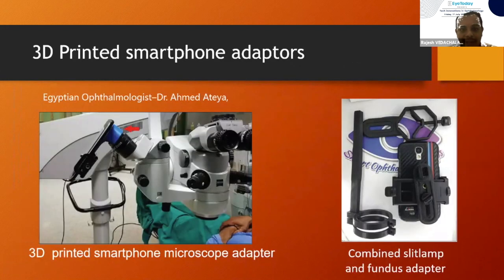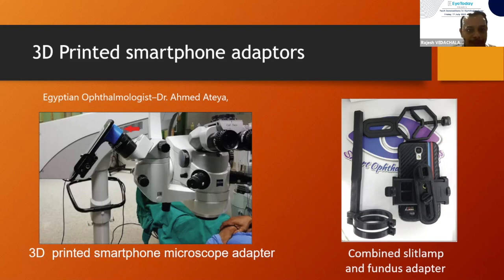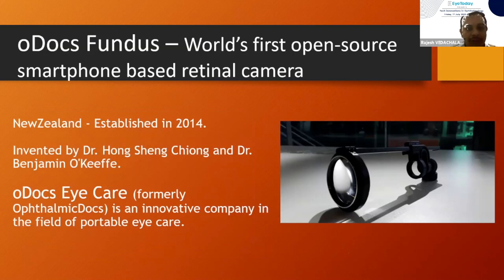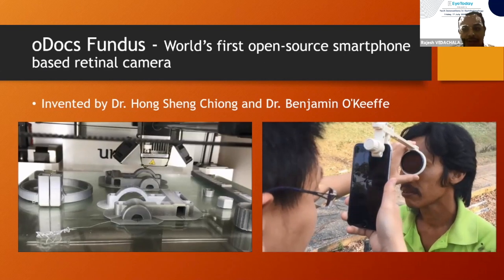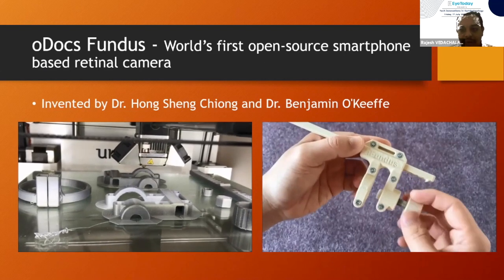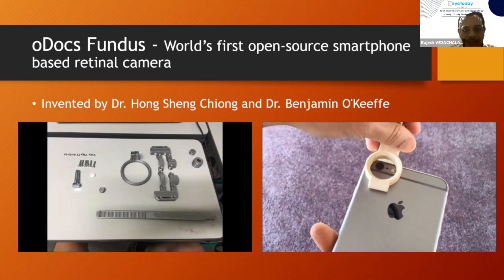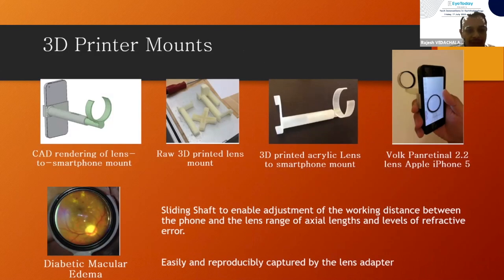In ophthalmology, when 3D printing was initially introduced, a lot of people 3D printed adapters. This is one adapter for a smartphone 3D printed by Ahmad Atiyya. On Oodocs, the first smartphone morphic retinal camera adapter was 3D printed. Using this, you can easily image the fundus using just a smartphone. Here you can see an image of the fundus with a lot of diabetic retinopathic changes, which can be easily captured.